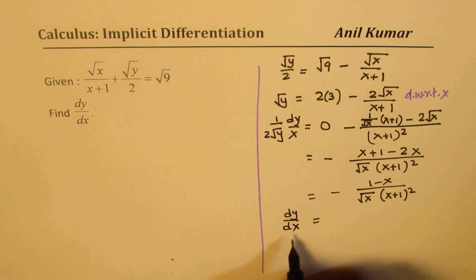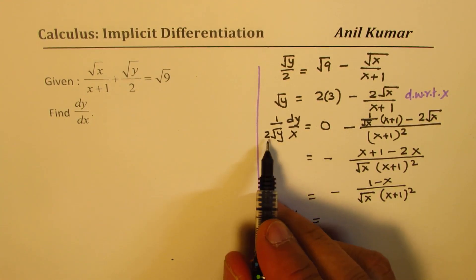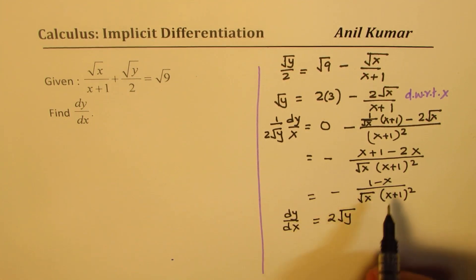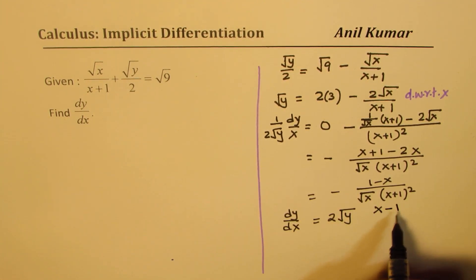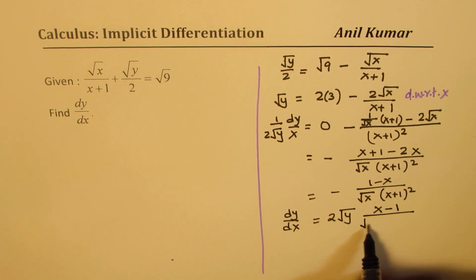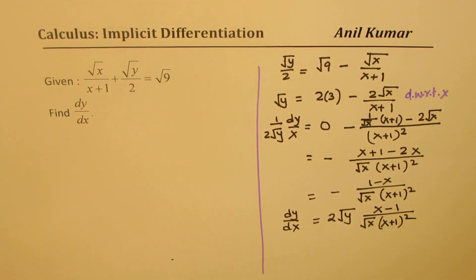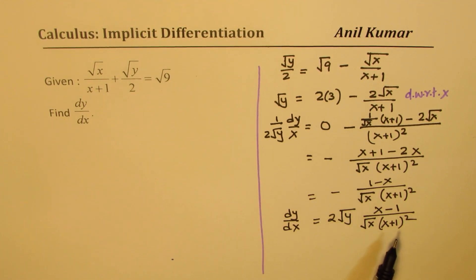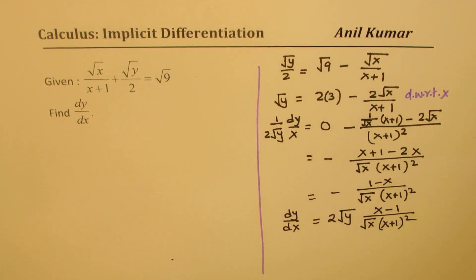We can now write dy/dx as equal to 2 times square root of y — changing the sign and writing the numerator as (x minus 1) — over square root of x times (x plus 1) squared. So we get our derivative in this form by isolating y. However, many times it is not so easy to do it that way.